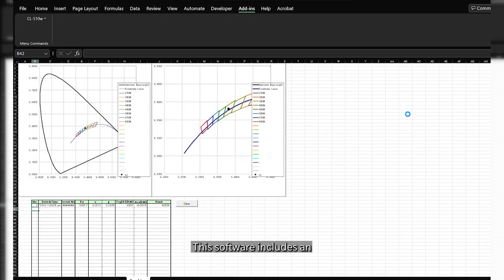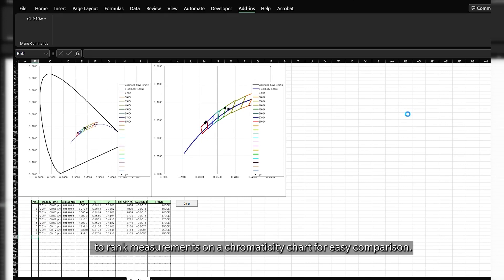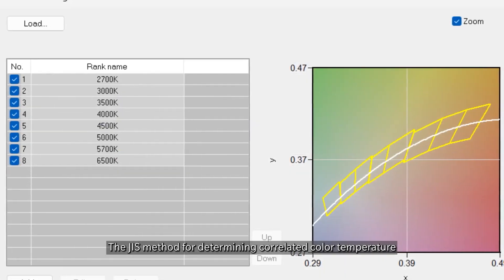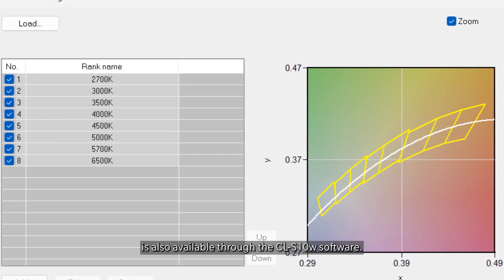This software includes an LED ranking function, also known as binning, that allows users to rank measurements on a chromaticity chart for easy comparison. The JIS method for determining correlated color temperature is also available through the CLS10W software.